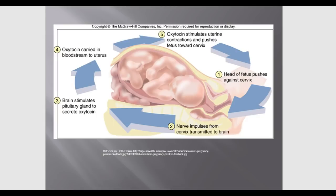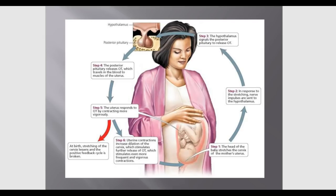In the oxytocin theory, as pregnancy progresses toward term, the head of the fetus puts pressure on mom's cervix — the terminal end of the uterus — which sends an impulse to the hypothalamus, signaling the posterior pituitary gland to release oxytocin. That oxytocin travels in the bloodstream to the uterus, causing it to contract more vigorously. Those contractions increase cervical dilation and stimulate more oxytocin release, which brings the baby down further, creating more pressure and sending another message to mom's brain.